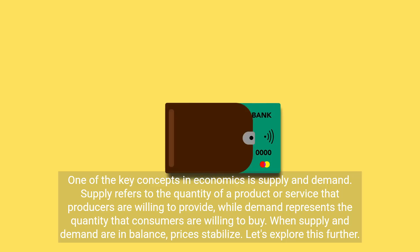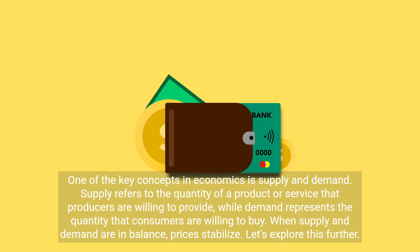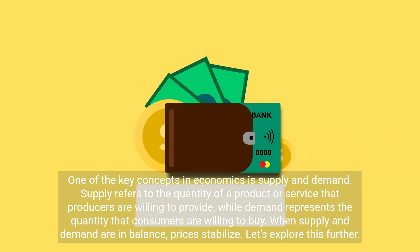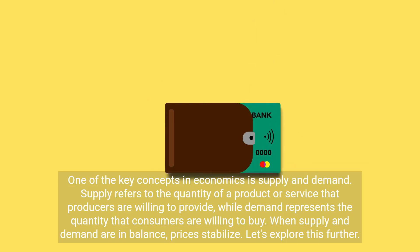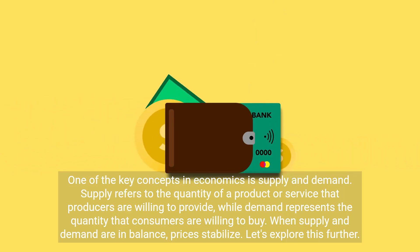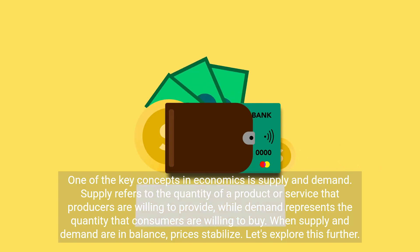One of the key concepts in economics is supply and demand. Supply refers to the quantity of a product or service that producers are willing to provide, while demand represents the quantity that consumers are willing to buy. When supply and demand are in balance, prices stabilize. Let's explore this further.